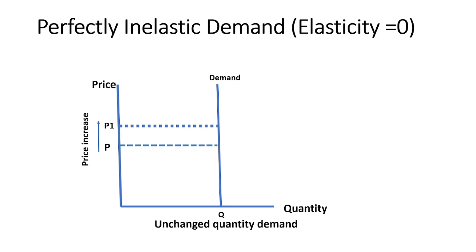This curve shows perfectly inelastic demand. When price increases from P1 to P2, quantity demanded remains unchanged, and the demand curve is vertical. There is no responsiveness of change in quantity demanded due to price change, so elasticity equals 0 in perfectly inelastic demand.